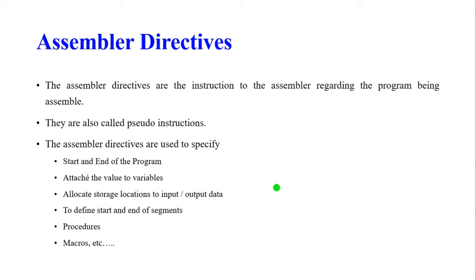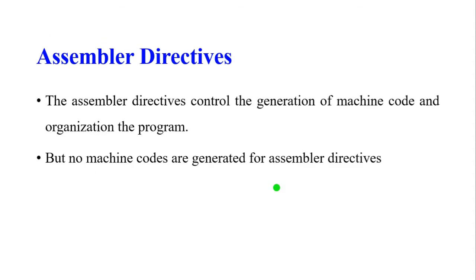The functions of assembler directives include: specifying the start and end of the program, attaching values to variables, allocating storage locations for input/output data, and defining the start and end of segments, procedures, macros, etc. Assembler directives control the generation of machine code and organize the program in a structured way, but they do not themselves have any machine code.